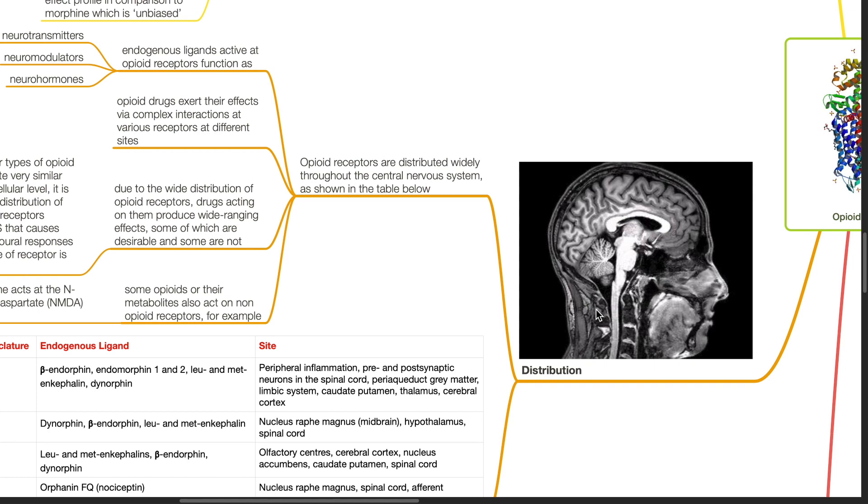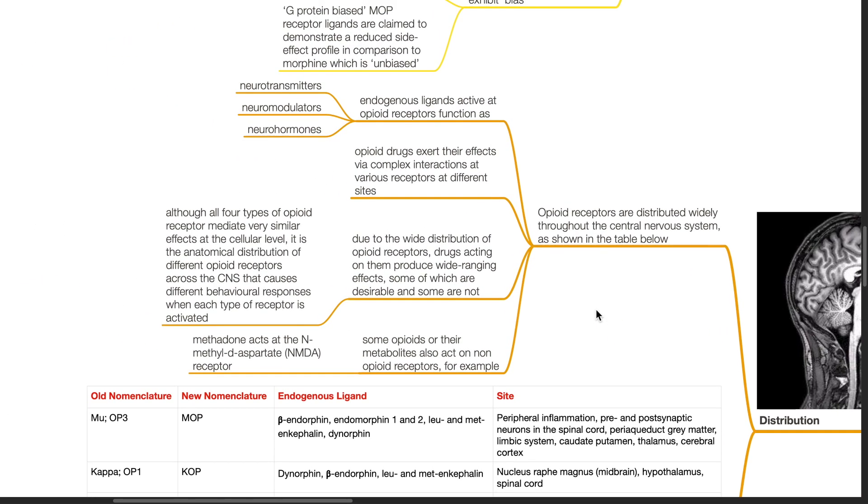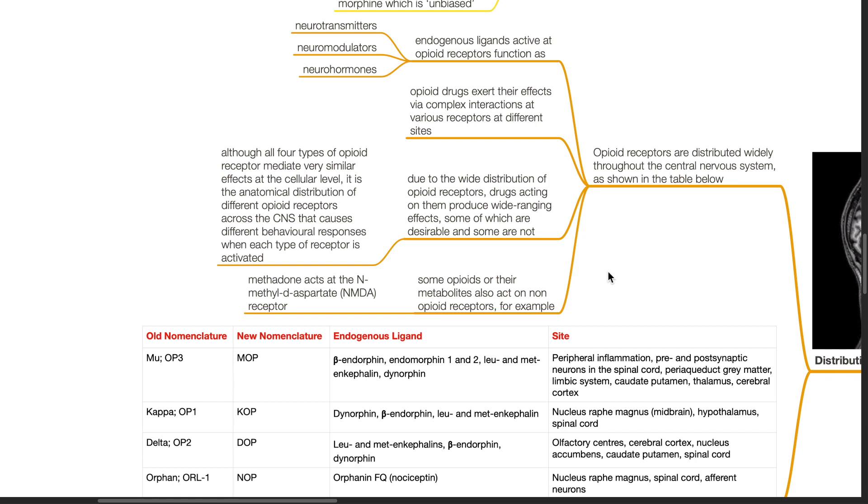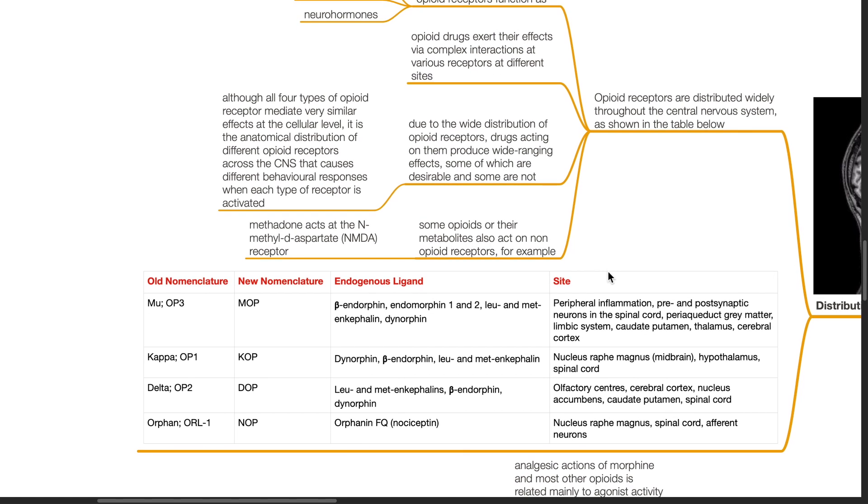Distribution of opioid receptors: Opioid receptors are distributed widely throughout the central nervous system as shown below in the table. Endogenous ligands active at opioid receptors function as neurotransmitters, neuromodulators, and neurohormones. Opioid drugs exert their effects via complex interactions at various receptors at different sites. Due to the wide distribution of opioid receptors, drugs acting on them produce wide-ranging effects, some of which are desirable and some are not. Although all four types of opioid receptors mediate very similar effects at the cellular level, it is the anatomical distribution of different opioid receptors across the CNS that causes different behavioral responses when each type of receptor is activated.